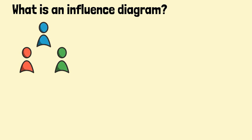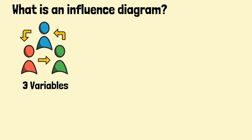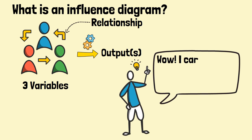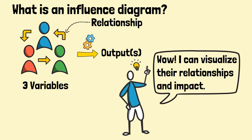What is an influence diagram? An influence diagram is a graphical representation of the relationships between different variables that can affect the outcome of a project or decision. It's a powerful tool that can help us visualize and understand how the factors will impact the outcome.